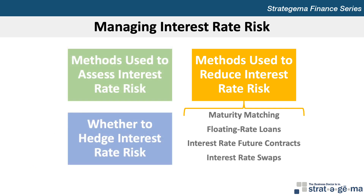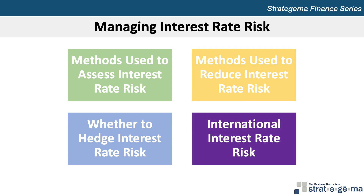Commercial banks can hedge interest rate risk by engaging in interest rate swaps, which is an arrangement to exchange periodic cash flows based on specified interest rates. An alternative method of hedging interest rate risk is an interest rate cap, an agreement for a fee, to receive payments when the interest rate of a particular security or index rises above a specified level during a specified time period. When a bank has foreign currency balances, the strategy of matching the overall interest rate sensitivity of assets to that of liabilities will not automatically achieve a low degree of interest rate risk. Even though a bank matches the mix of currencies in its assets and liabilities, it can still be exposed to interest rate risk if the rate sensitivities differ between assets and liabilities for each currency.